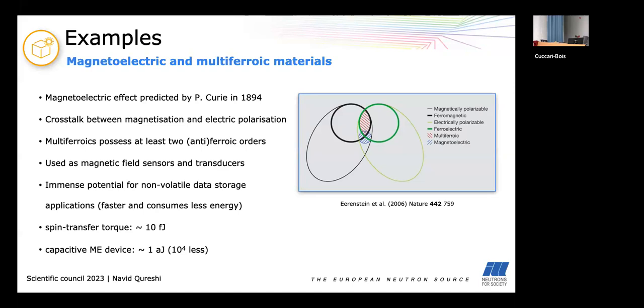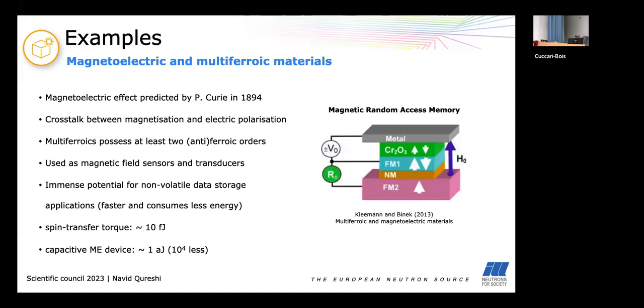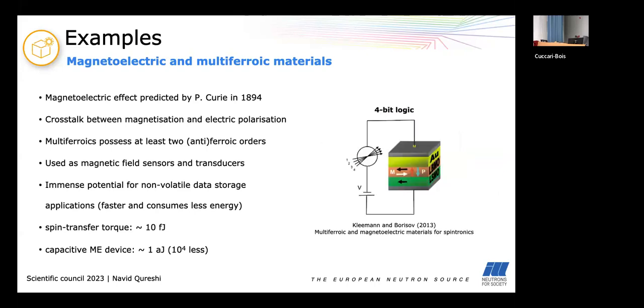Multiferroics are already used as magnetic field sensors and transducers but their immense potential lies in the non-volatile data storage because it's much faster and consumes less energy to pole your magnetization by an electric field than with a magnetic field. So different ideas are for example in magnetic random access memory. So here you have a magnetic tunnel junction and instead of poling your ferromagnet by a magnetic field you would put a layer of a magnetoelectric material and pole it by an electric field and making use of the exchange bias effect you would pole the ferromagnet here. Or you make use of the two times two possibilities of magnetization and polarization to create a four-bit logic with four different tunneling resistances and that's important for information density.